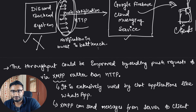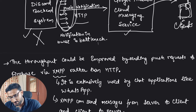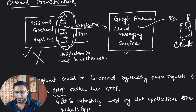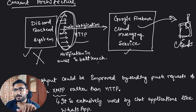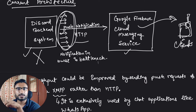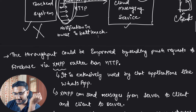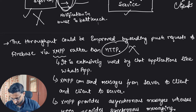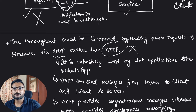So what could be the reason? The throughput could be improved by sending push requests to Firebase via XMPP rather than HTTP. The bottleneck is that since you are publishing push notifications via HTTP, you are establishing an HTTP connection, sending notification data to Google Firebase, and that is passed on to clients. This HTTP connection is causing the bottleneck. What is the problem with HTTP, and what does XMPP specifically provide that HTTP is missing?